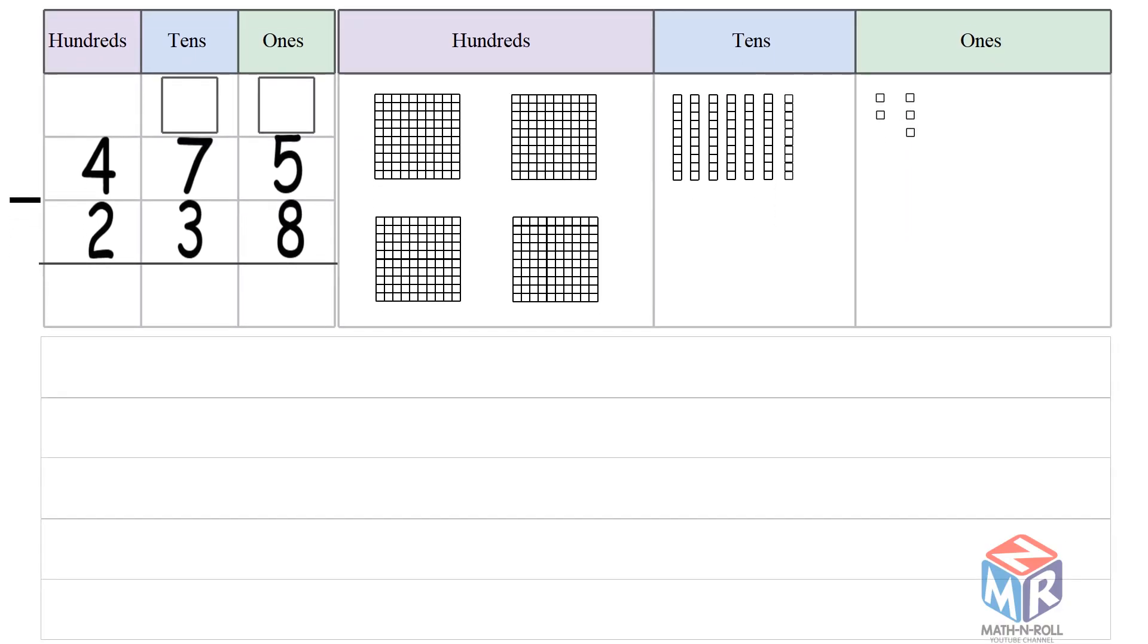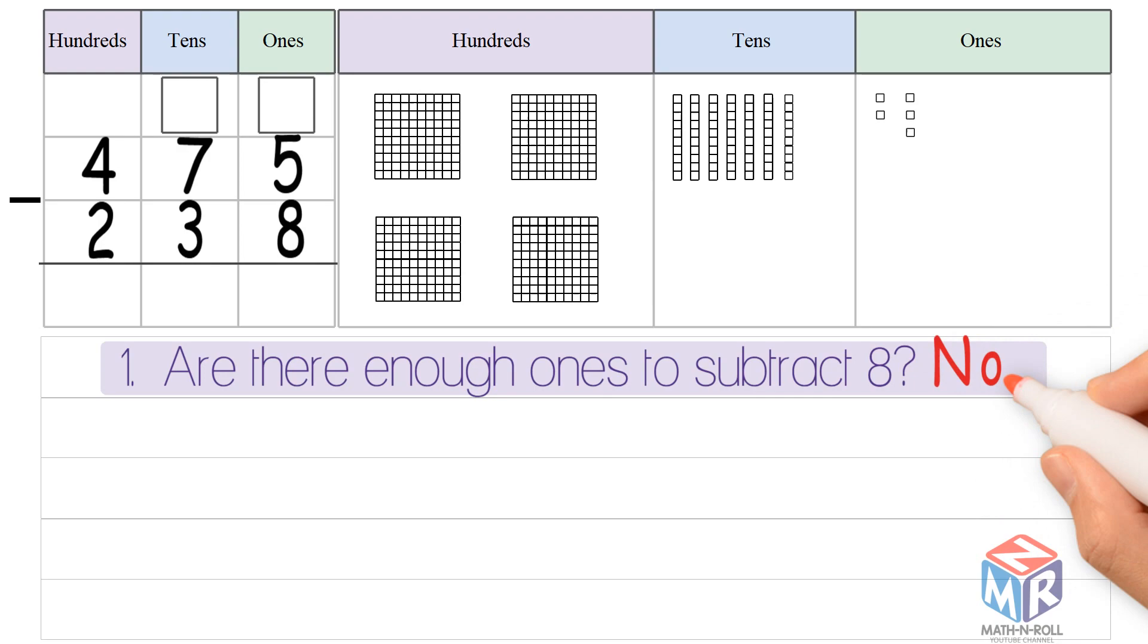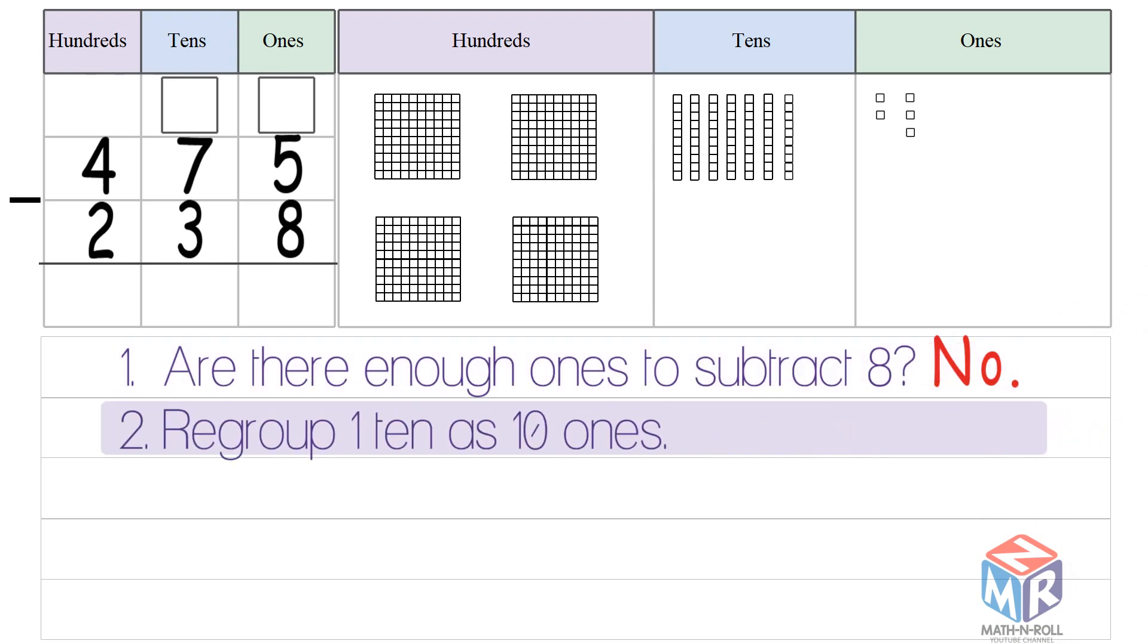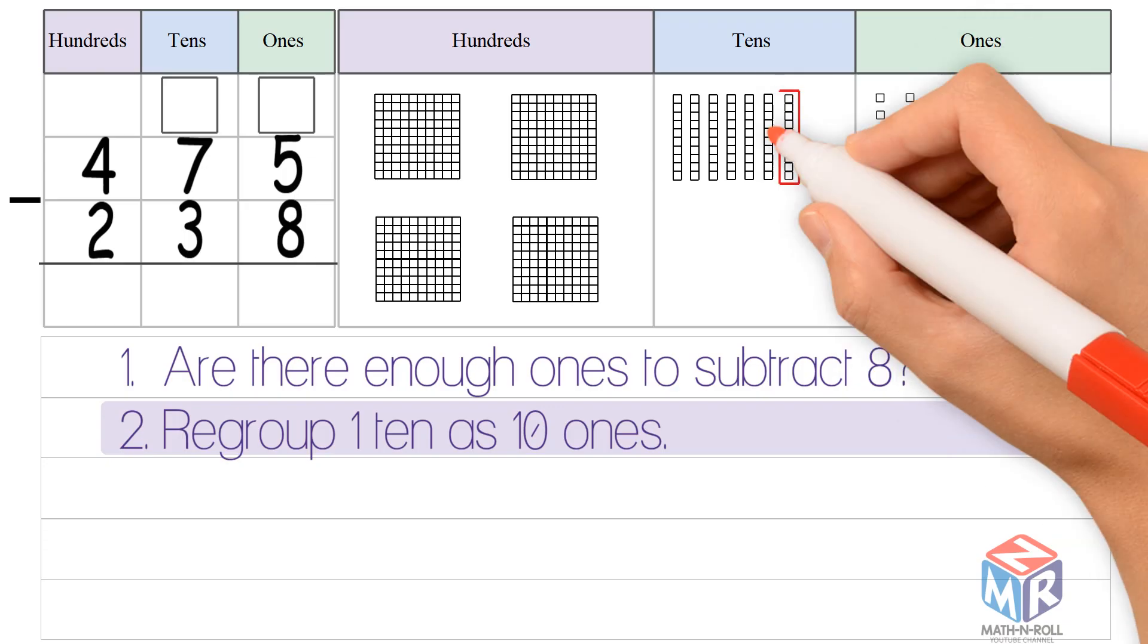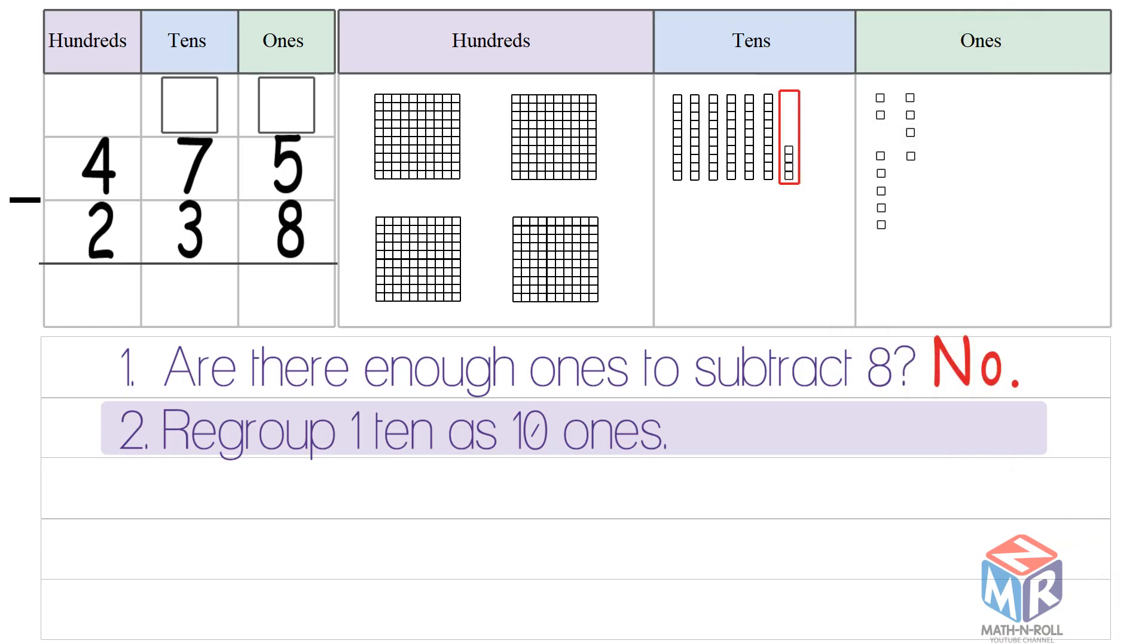First, we subtract the ones. Are there enough ones to subtract 8? No, we can't subtract 8 from 5, so we have to regroup 1 ten. We regroup 1 ten as 10 ones, so we bring it over to the ones, and now we have 15 ones.